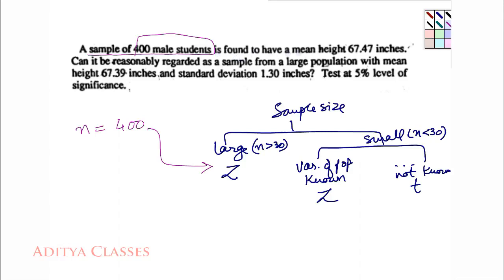A sample of 400 male students is found to have a mean height of 67.47 inches. Sample is found to have a mean height of 67.47. So my x bar is 67.47. What is x bar? Sample mean.